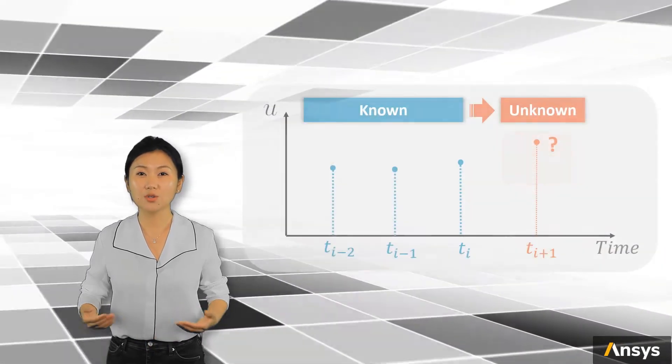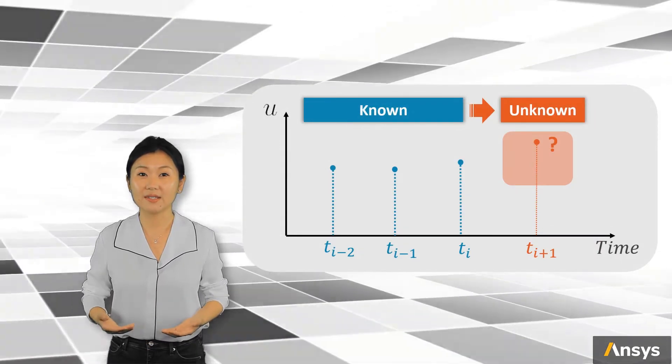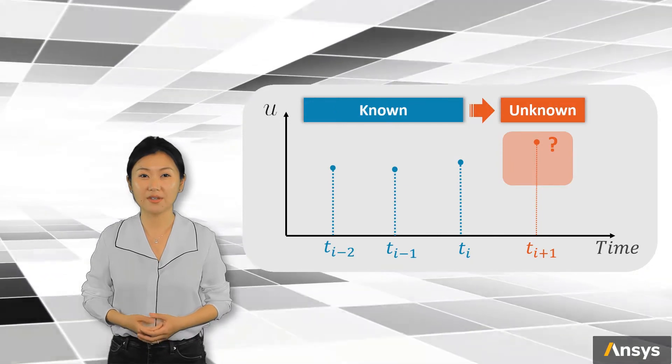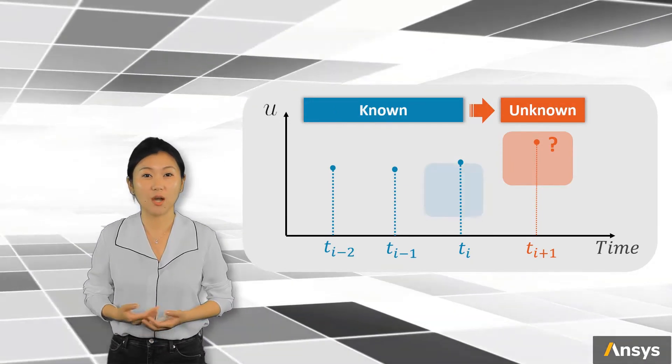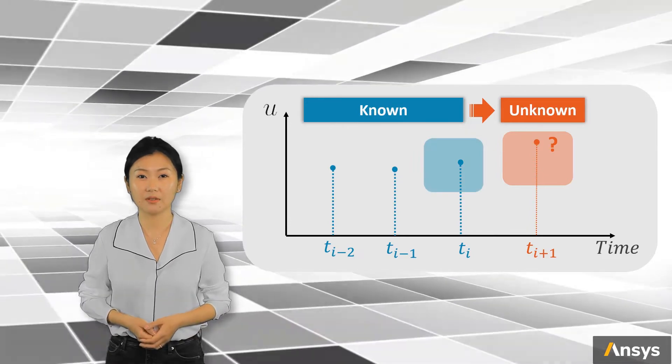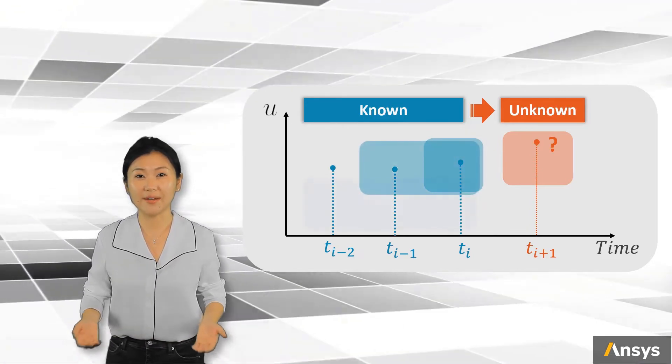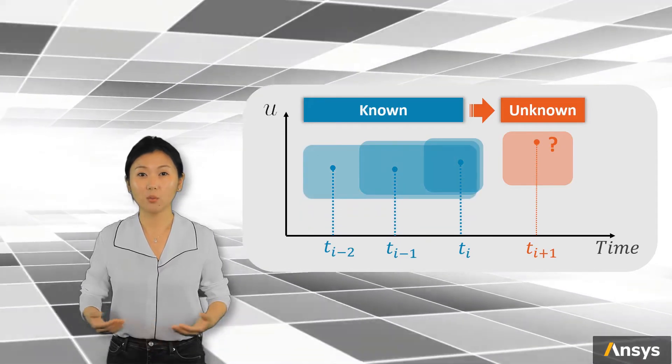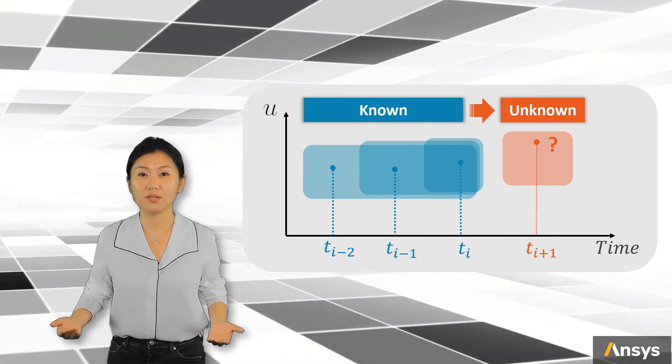So how to use the previous known time step solution? There are many different ways, and this leads to different time integration methods. Some methods use only one previous solution to calculate the next time step. Some other methods use several previous time steps to find next solution. The way to progress from previous to next step varies between different methods too.